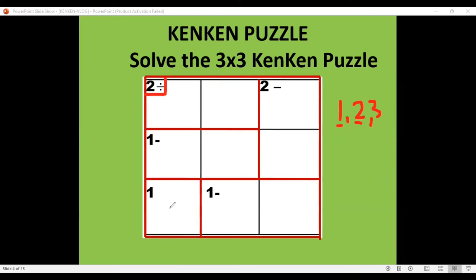But you have to take note of the other boxes. There is a certain box here wherein there is no operation. This simply means that the number is automatically placed there — that is already the position of 1 if there is no operation. The operation tells us that the numbers in a cage must have either a sum, a difference, a product, or a quotient.